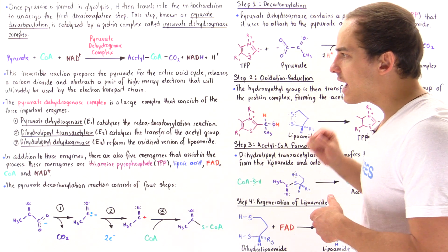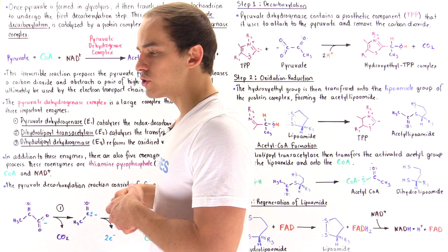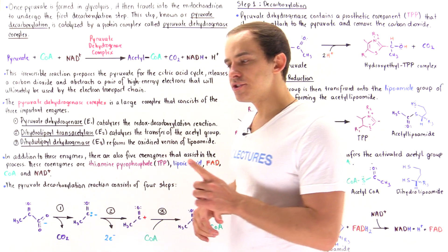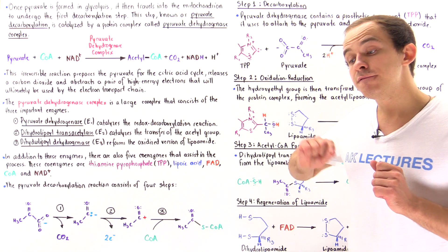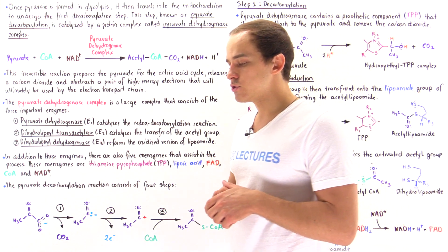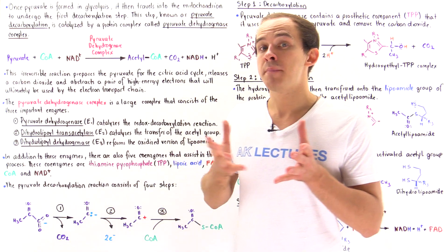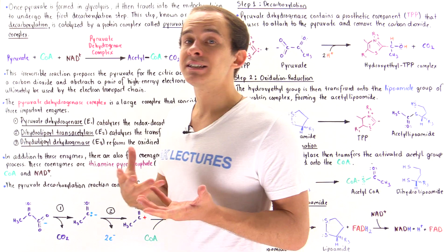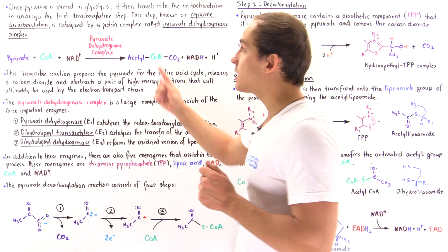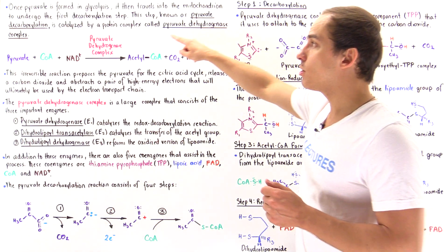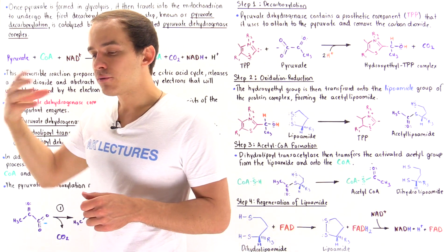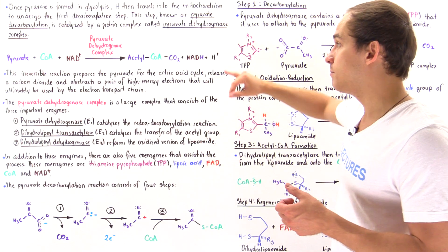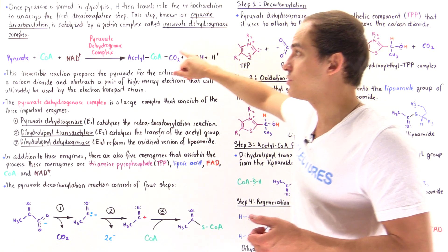What happens to pyruvate as soon as it moves into the matrix of the mitochondria? It will not actually enter the citric acid cycle directly. The pyruvate molecule must first be prepared and activated for the citric acid cycle through a process known as pyruvate decarboxylation, catalyzed by a large protein complex called the pyruvate dehydrogenase complex.